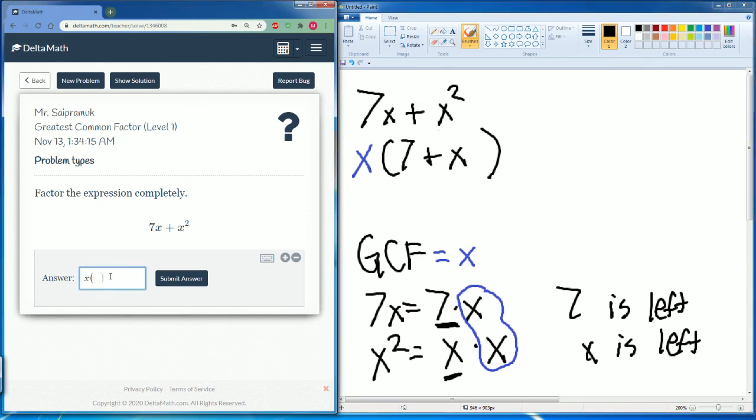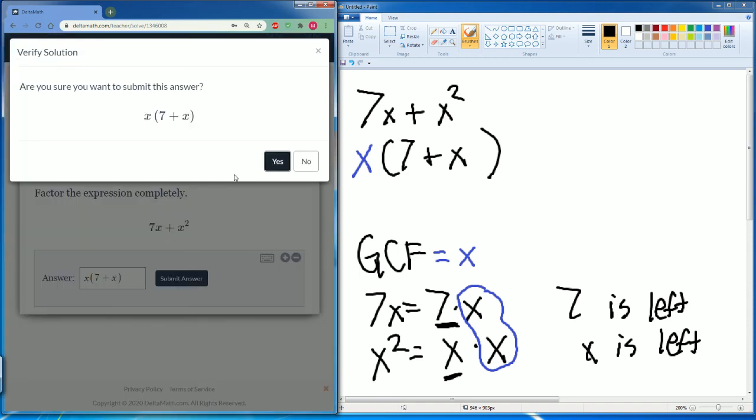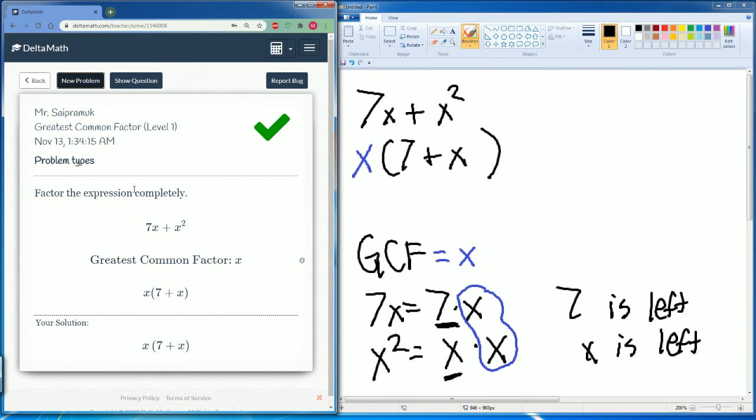And there you go. So that should cover everything that you need to know how to do when it comes to finding the greatest common factor level 1.